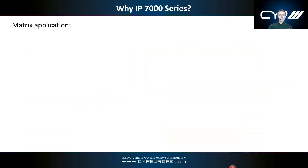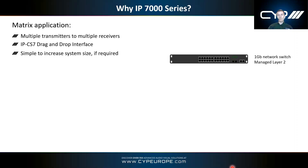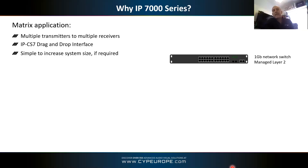In a matrix application you have multiple transmitters to multiple receivers, and you use the CS7 controller with its drag-and-drop interface for simple switching. You can grow the system at any time by adding a transmitter or receiver. All of this is based around a one gig network switch — either a managed Layer 2 or Layer 3 switch.